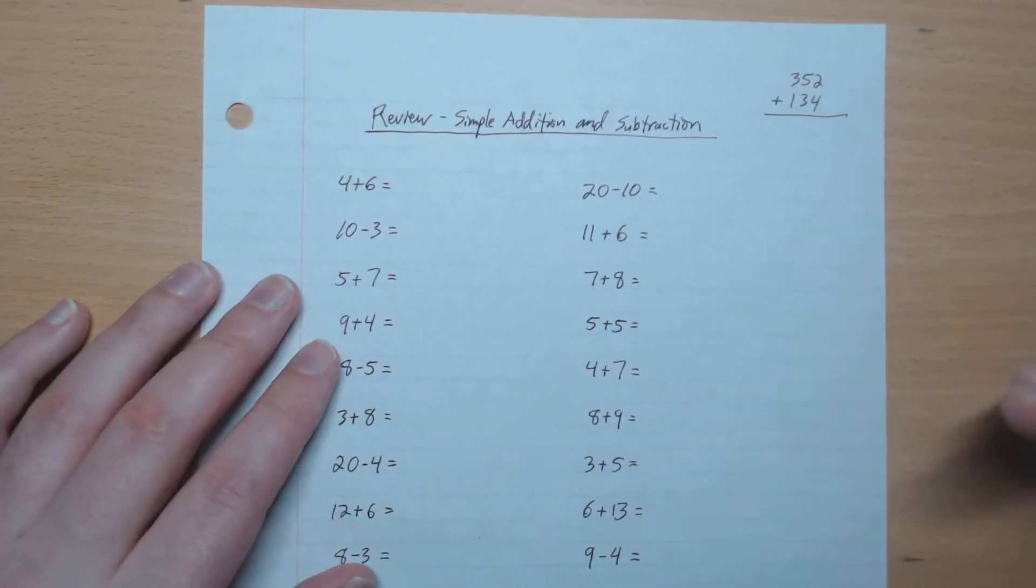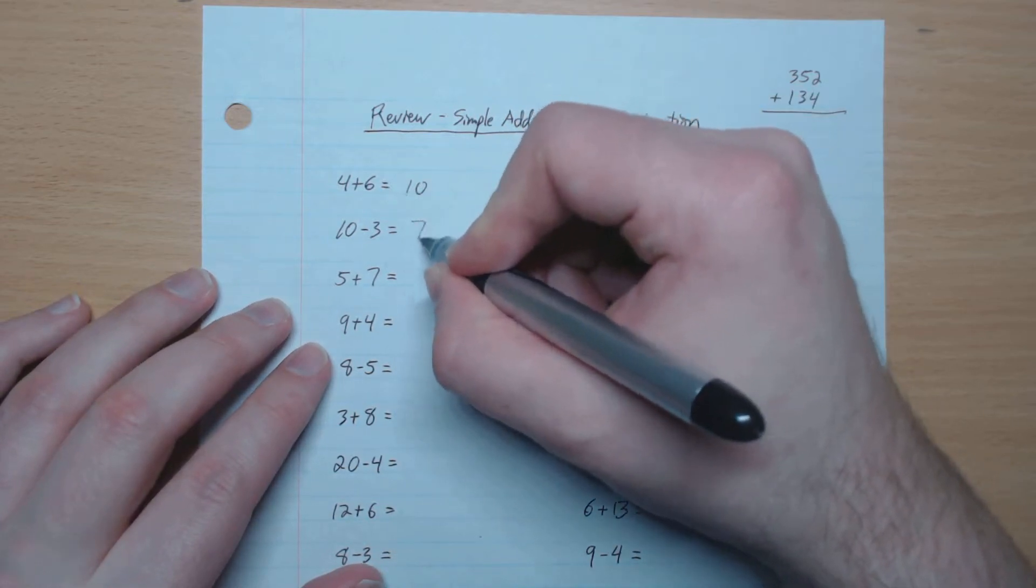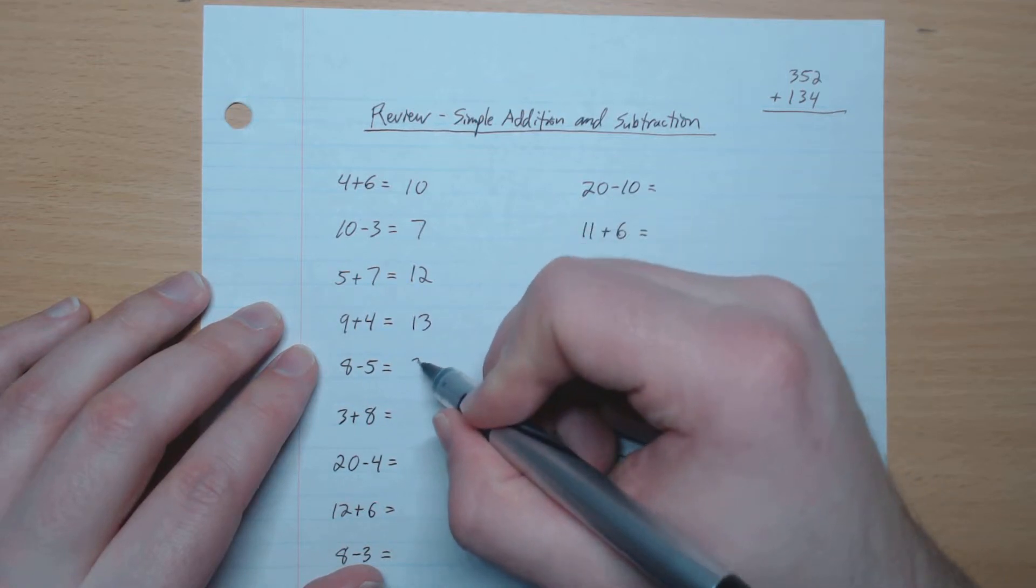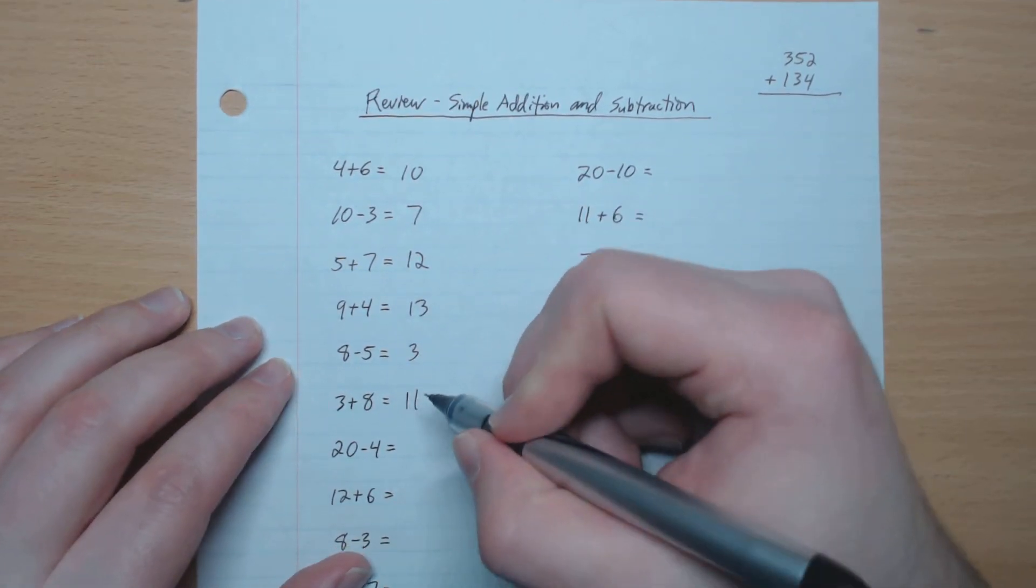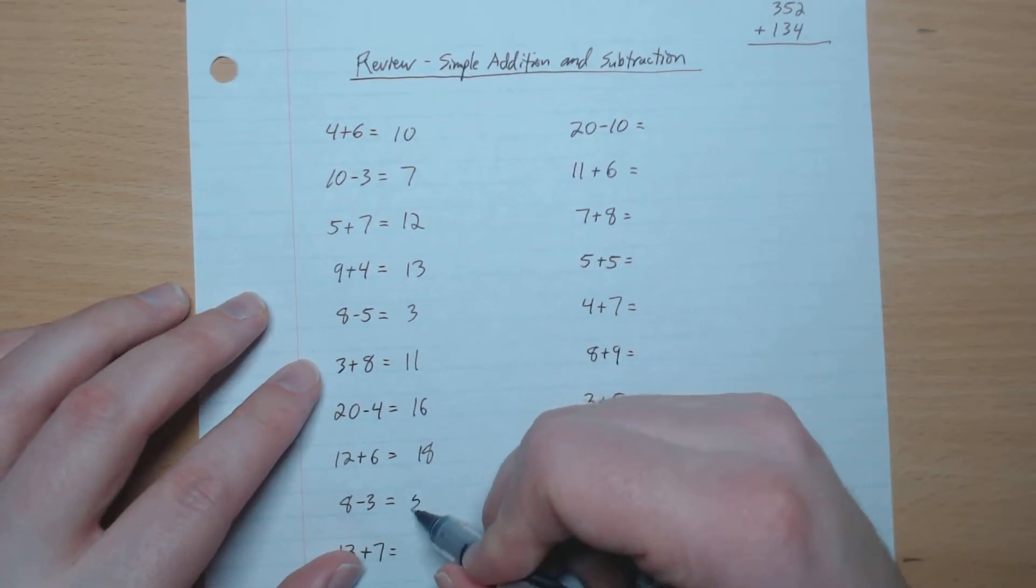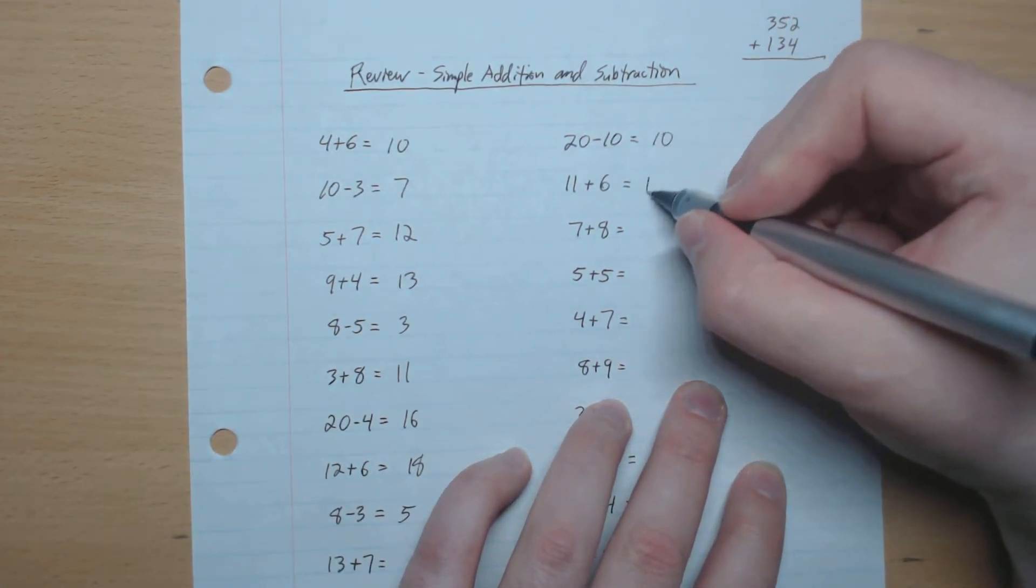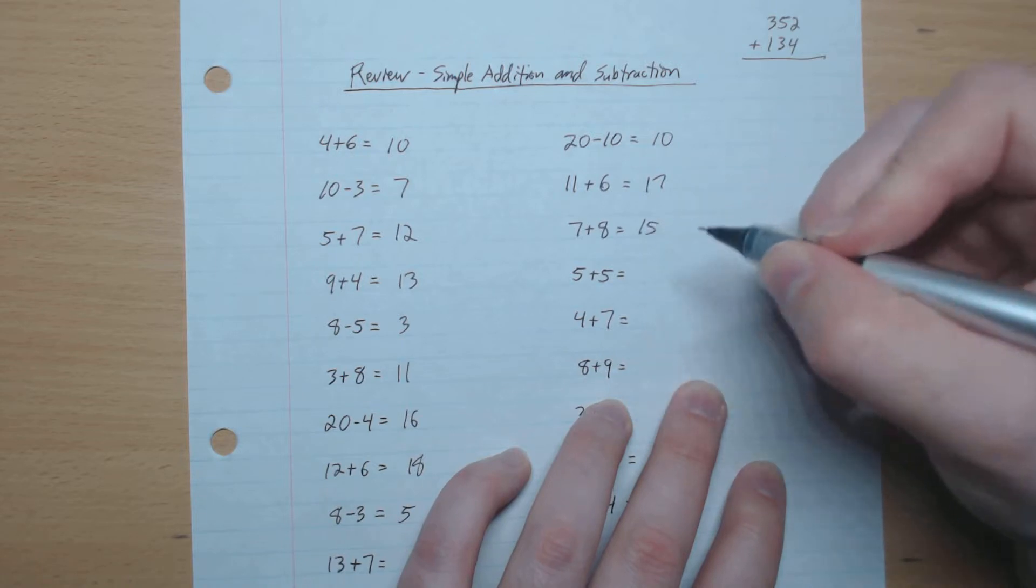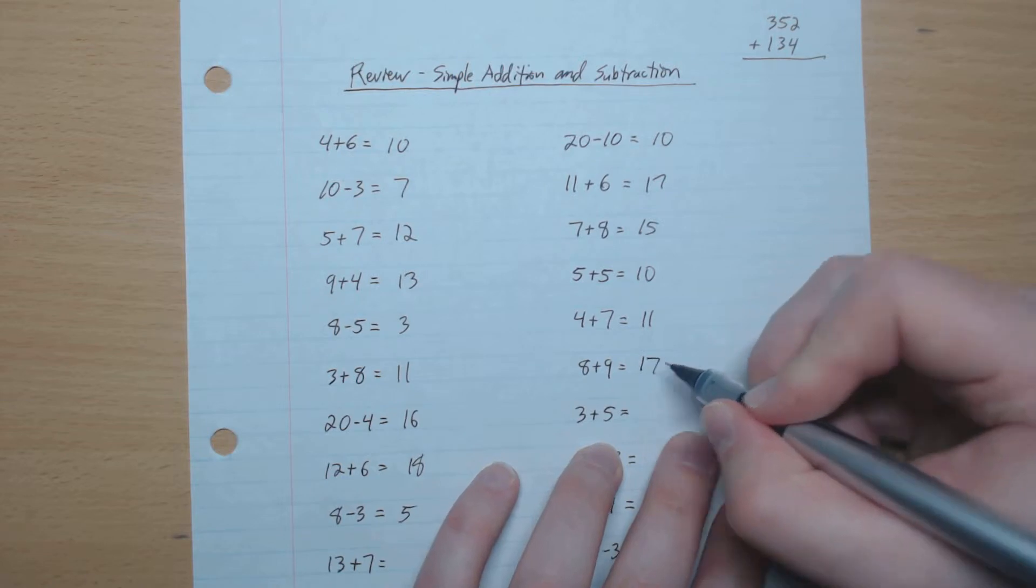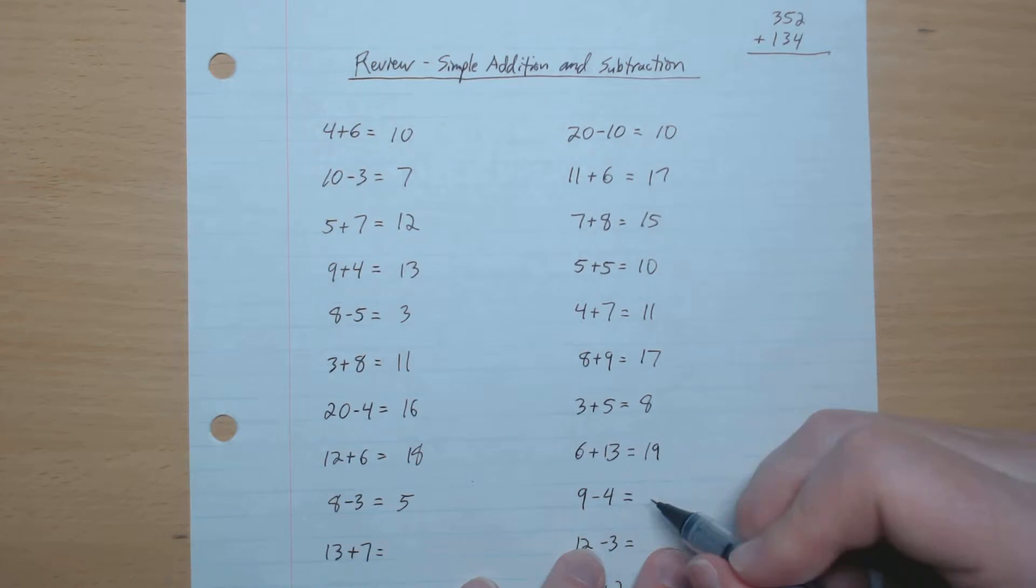Okay we're back so let's go ahead and do these calculations together. 10, 7, 12, 13, 3, 11, 16, 18, 5, 10, 17, 15, 10, 11, 17, 8, 19, 5.